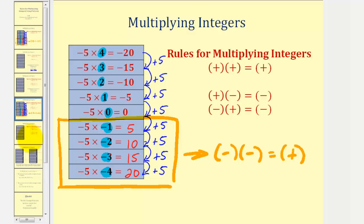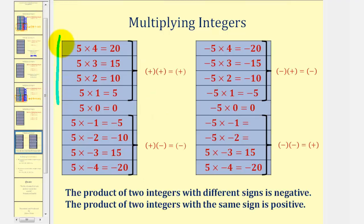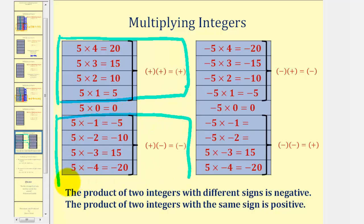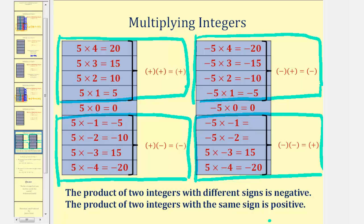Let's formalize our four rules for multiplying integers. In the first two rules, if the signs are different, the product is negative. In the other two rules, if the signs are the same, the product is positive. We started knowing a positive times a positive is positive, then discovered a positive times a negative is negative, also that a negative times a positive is negative, and ended by discovering a negative times a negative is positive. The product of two integers with different signs is negative, and the product of integers with the same sign is positive.